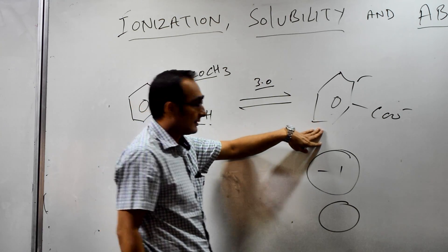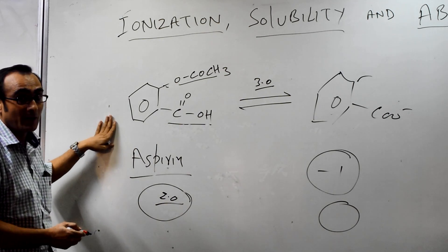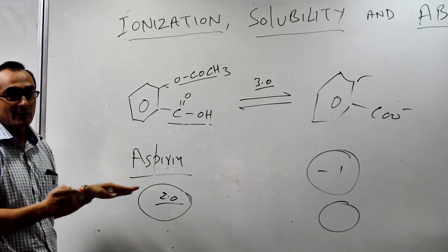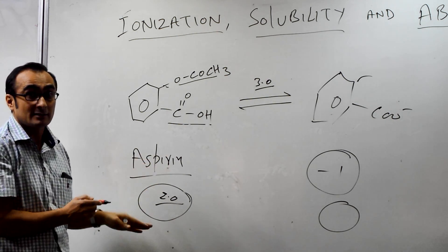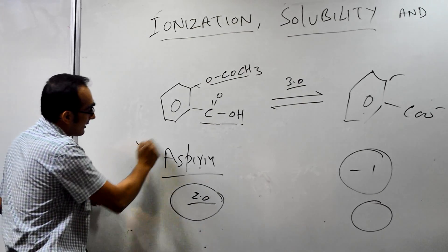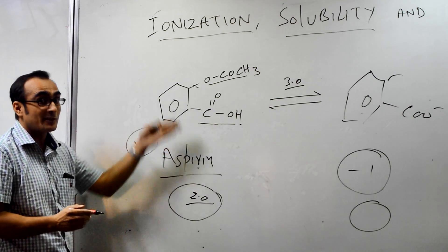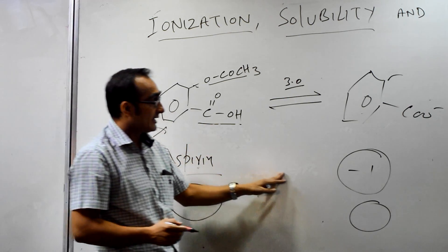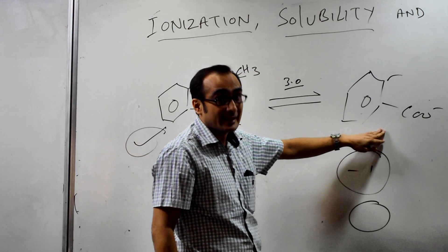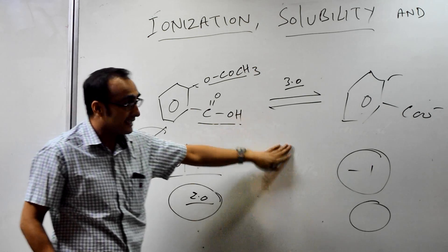At low pH there is no net charge — the compound is neutral — so it can be absorbed rapidly across the plasma membrane. In the stomach, the pH is low, so the neutral state of the drug exists there and it can absorb rapidly. In the intestine, the pH is high, around 8, so the drug is negatively charged and absorption across the plasma membrane is less in the intestine.